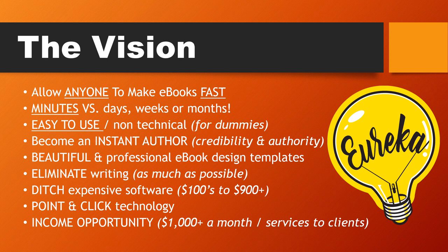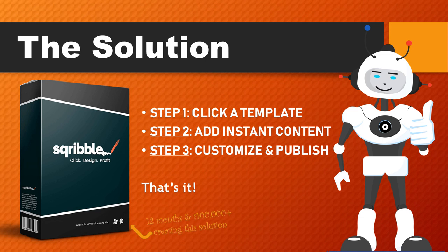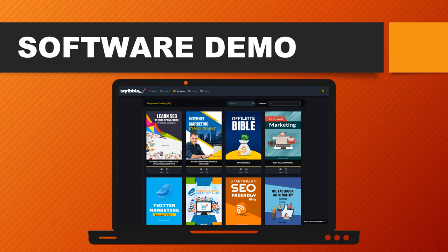One last goal behind Scribble was to allow anyone to have an income opportunity — not just use the software for your own projects, to create your own e-books, reports, and lead magnets, but also to use it as a dual purpose to create income by selling services to clients and making at least $1,000 a month. It actually took 12 months and around $100,000 in investment to create this solution called Scribble — click, design, and profit to create e-books with content in minutes, not months. There are really just three easy steps: step one, click a template; step two, add instant content; step three, customize your e-book and publish it.